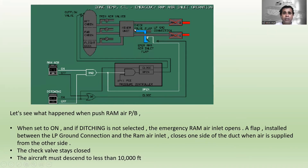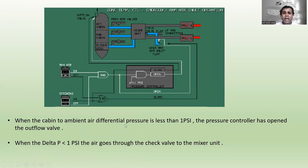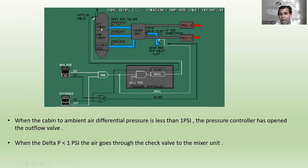The check valve stays closed and the aircraft must descend to less than 10,000 feet. When the cabin-to-ambient air differential pressure is less than 1 PSI, the pressure controller has opened the outflow valve. At that point, the air goes through the check valve to the mixture unit, and then on to the flight deck, forward cabin, and aft cabin.